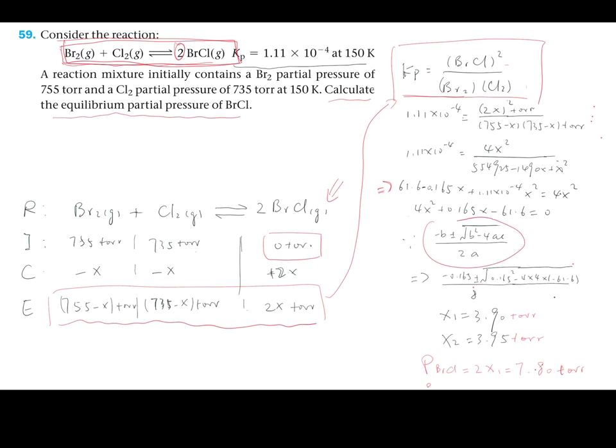As you plug all the values into the quadratic solution, you will obtain two results: x1 equals 3.94 torr, and x2 equals—sorry, there's a mistake—it should be minus 3.95 torr.